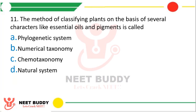Question 21. The method of classifying plants on the basis of several characters like essential oils and pigments is called chemotaxonomy. The correct answer is Option C, Chemotaxonomy.